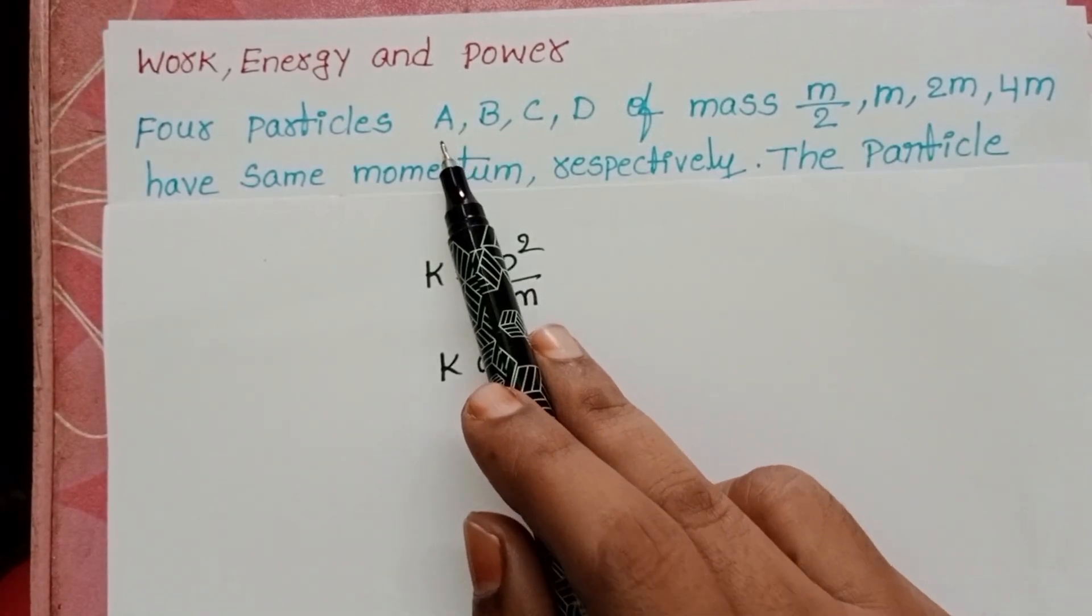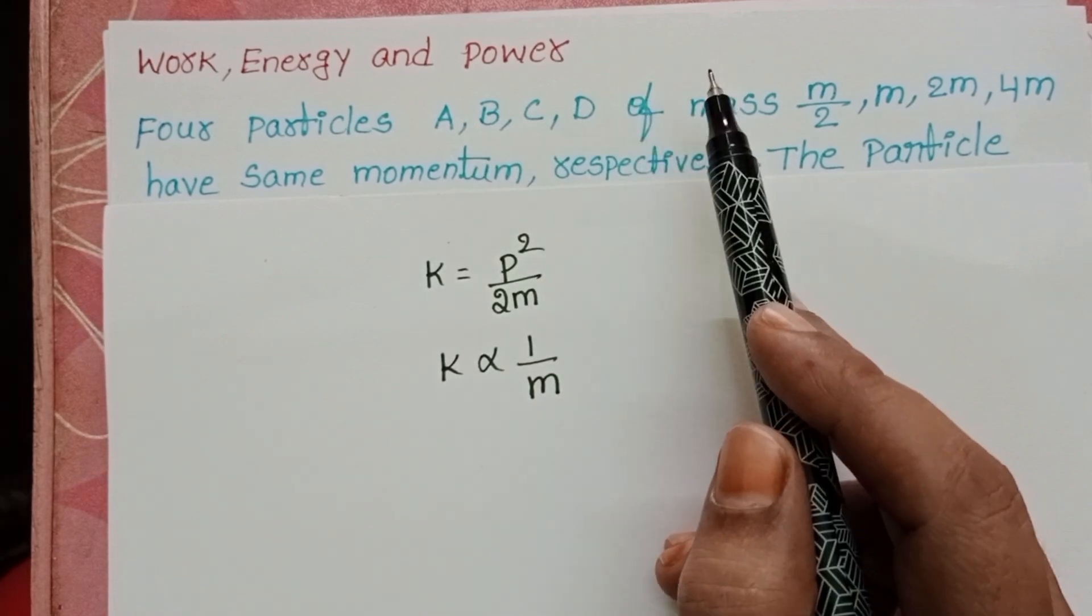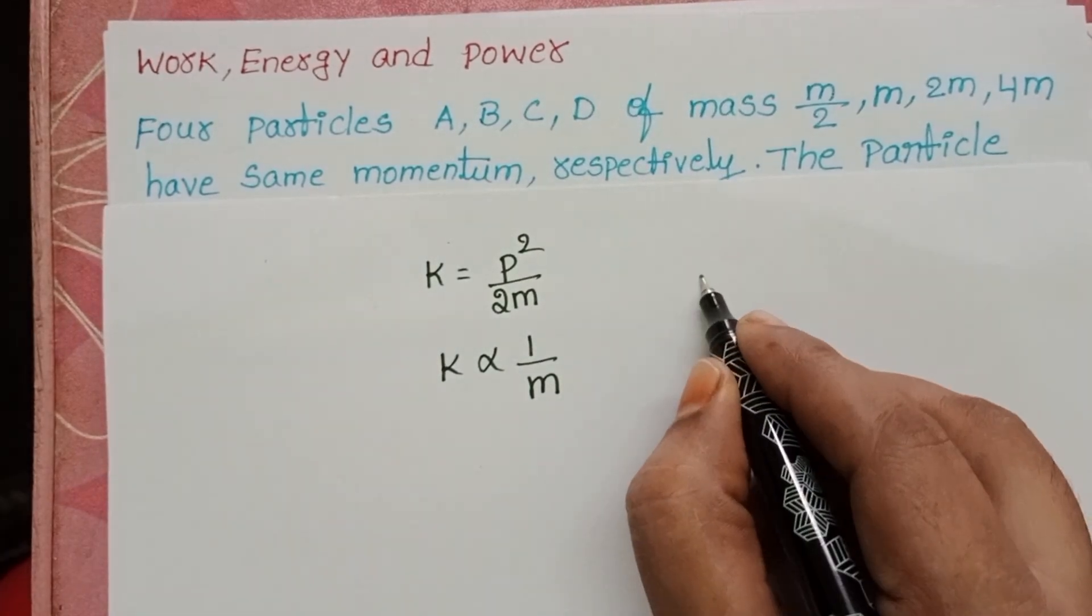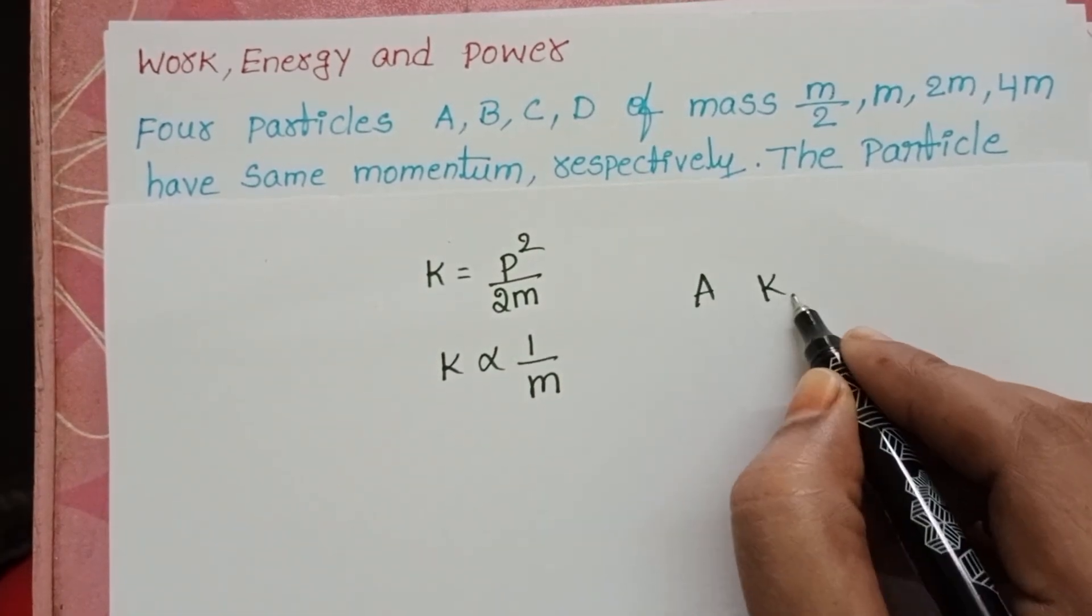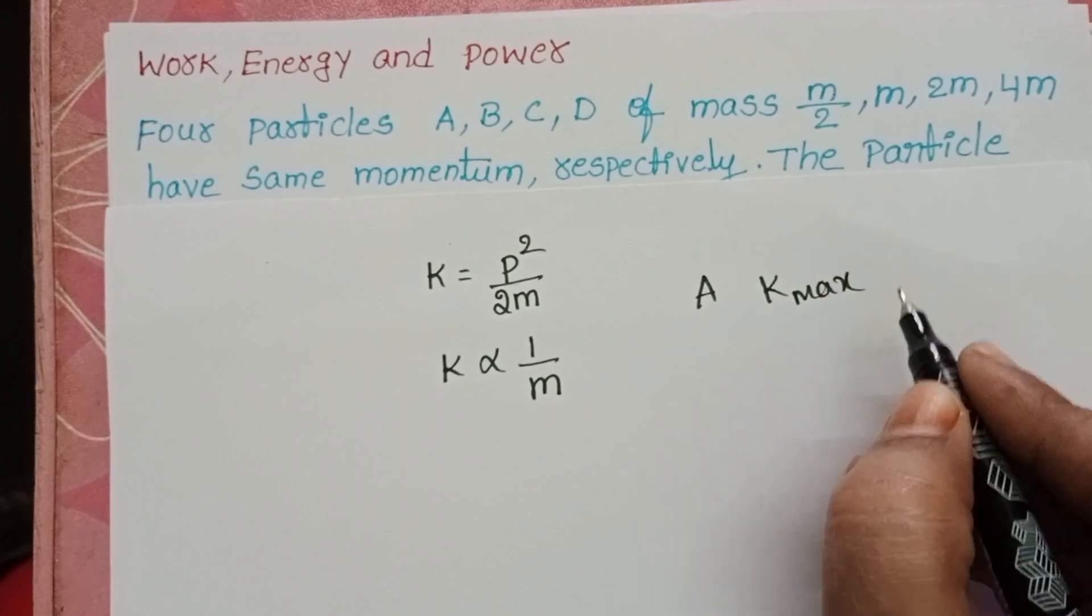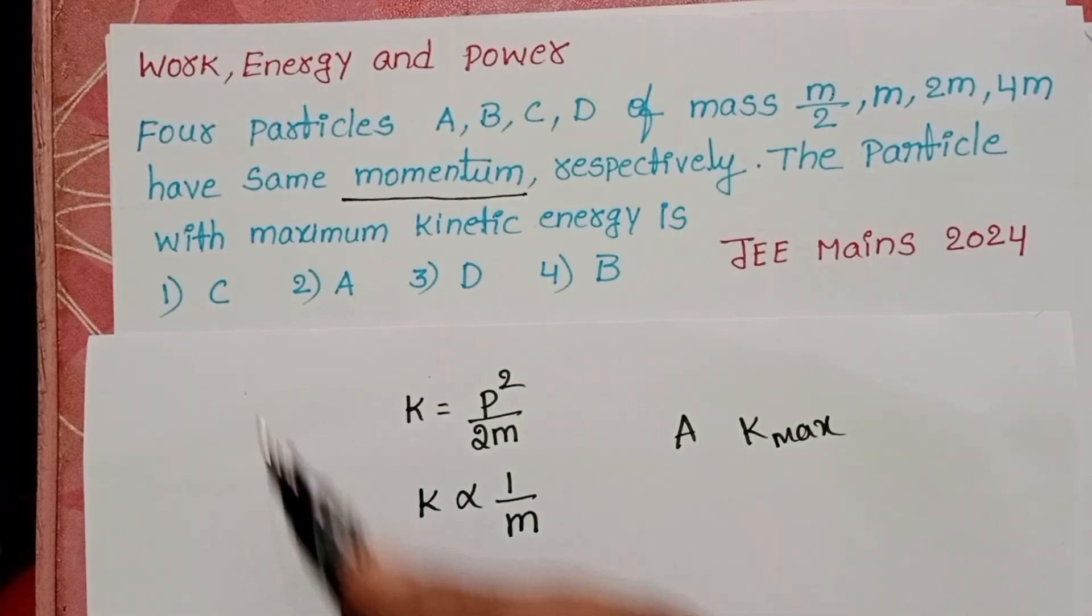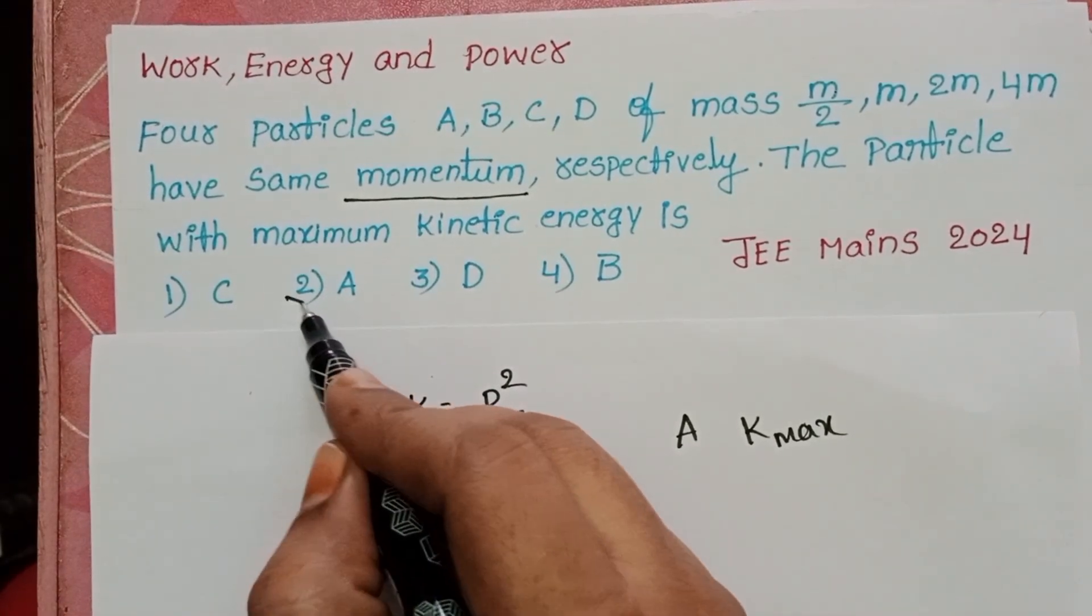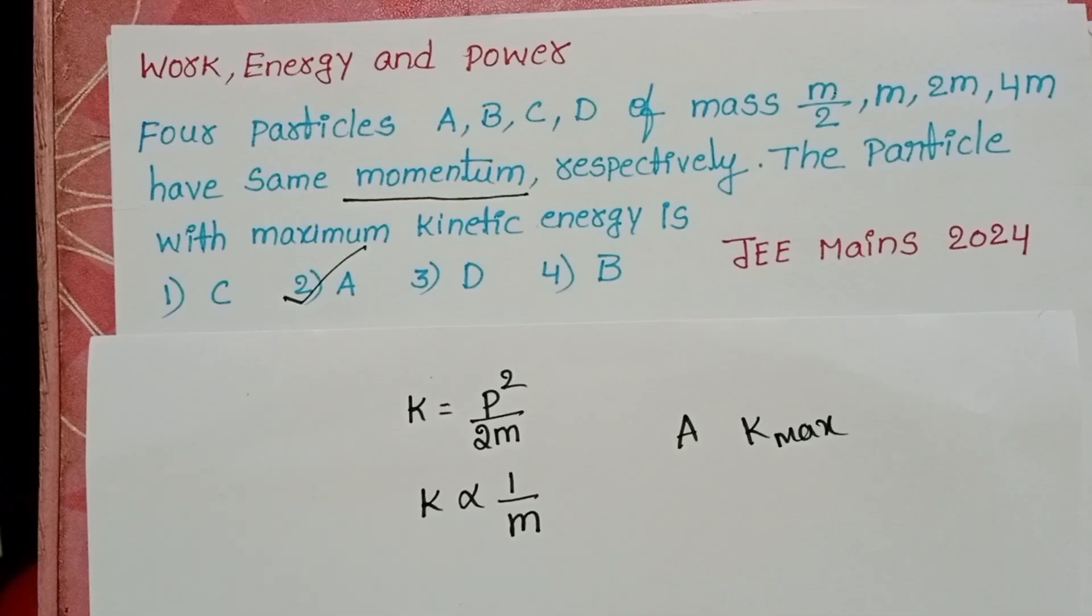So particle A has maximum kinetic energy due to the less mass. Second option, particle A has maximum kinetic energy. I'll see you next time.